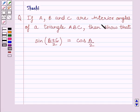Question says, if A, B and C are interior angles of a triangle ABC, then show that sin of B plus C upon 2 is equal to cos A upon 2.